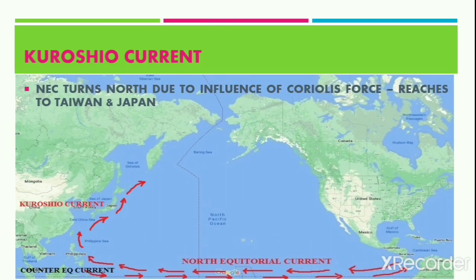The North Equatorial Current, on reaching the Philippine Islands, turns towards the north under the influence of the Coriolis force and also because of the shape of the coastline. These currents then reach Taiwan and Japan, and here the current is known as the Kuroshio Current.